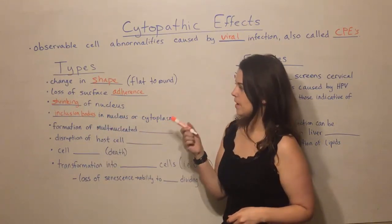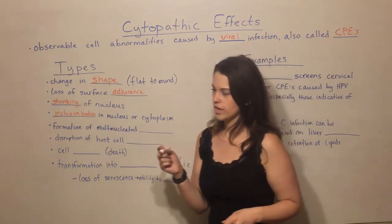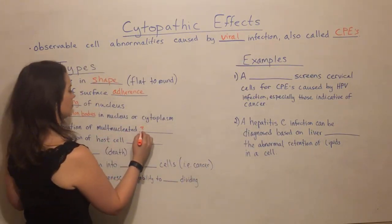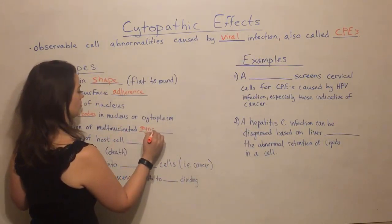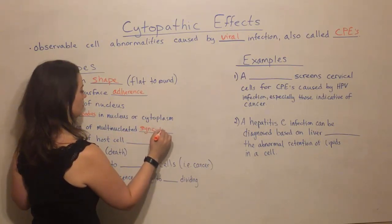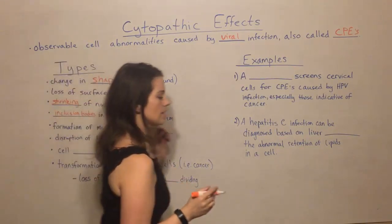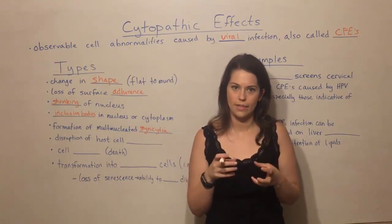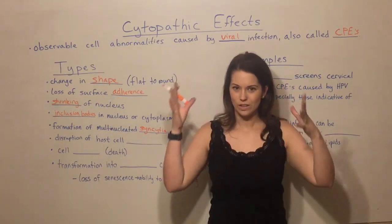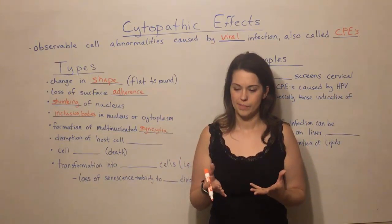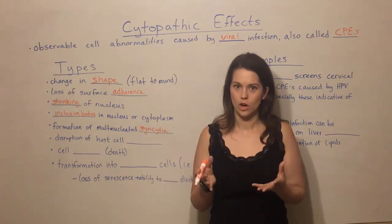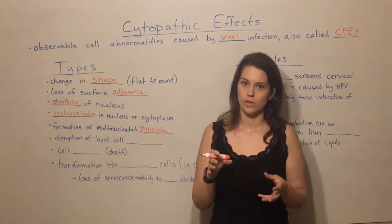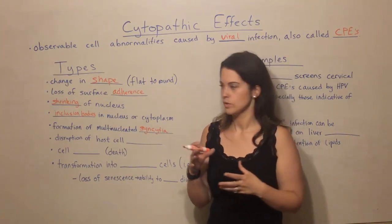Another type of CPE is the formation of multi-nucleated syncytia. Syncytia are when you have multiple cells fused together, so that you have one large, overly large structure that has many different nuclei in it — coming from many individual cells that have fused together.